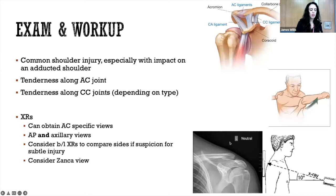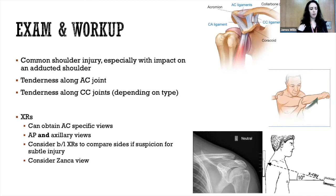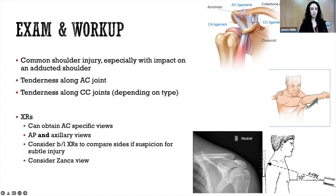For exam and workup of an AC injury — it's a very common shoulder injury, with one of the most common mechanisms being impact on an abducted shoulder. You can assess specifically for AC joint tenderness by following the clavicle out to its distal edge. There's also tenderness along the coracoclavicular joint. The AC joint compression test involves adducting the arm across the body — they may have increased pain with that.